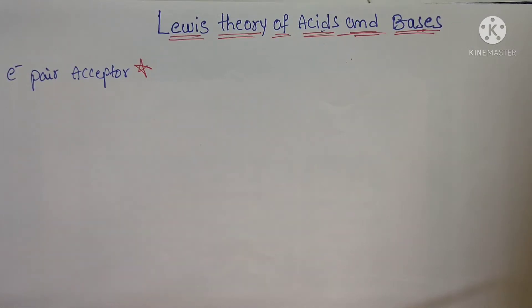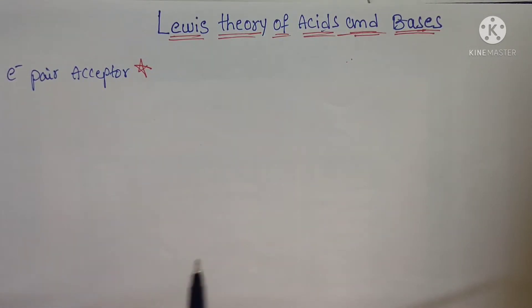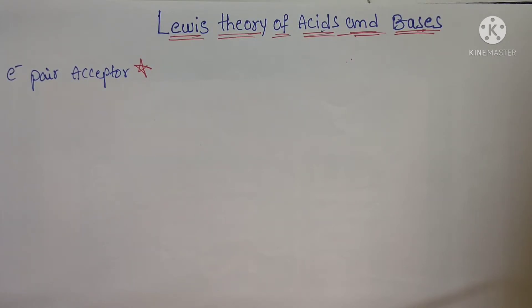Hello students. Today our topic is Lewis theory of acids and bases. In the last session we already discussed about Bronsted-Lowry theory. Then again, why another theory? Because the Bronsted-Lowry theory has some drawbacks — it cannot explain compounds like beryllium chloride, BF3, BCl3. These are electron deficient compounds that the Bronsted-Lowry theory failed to explain. To overcome those drawbacks, Lewis proposed a wonderful theory based on electrons.